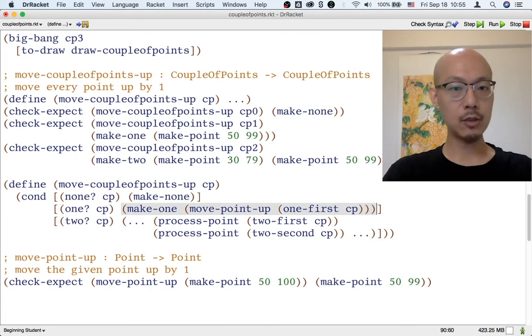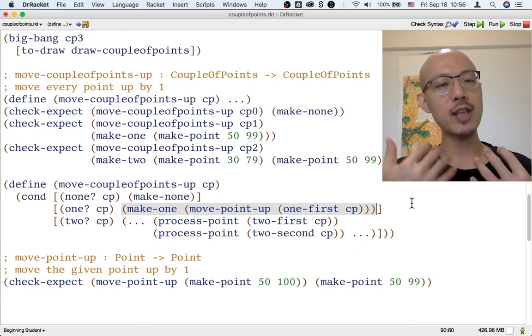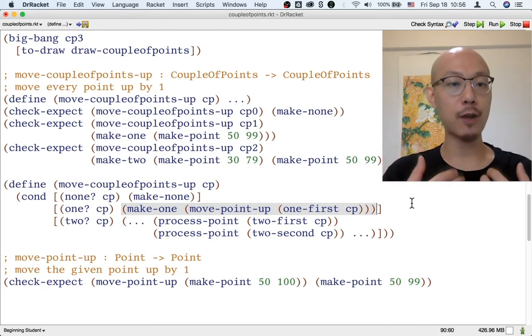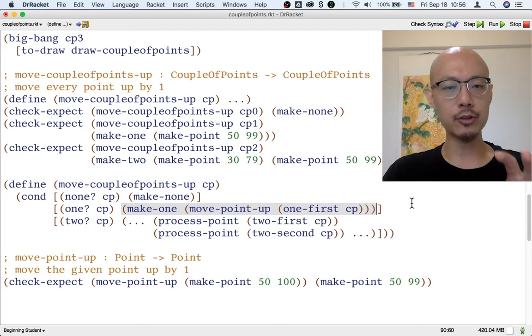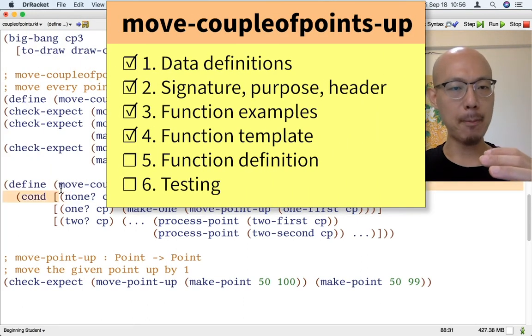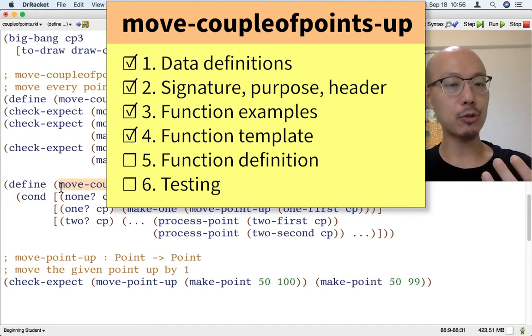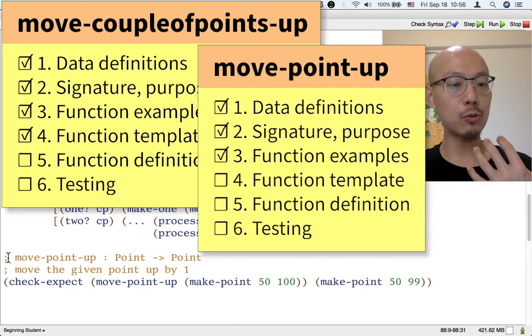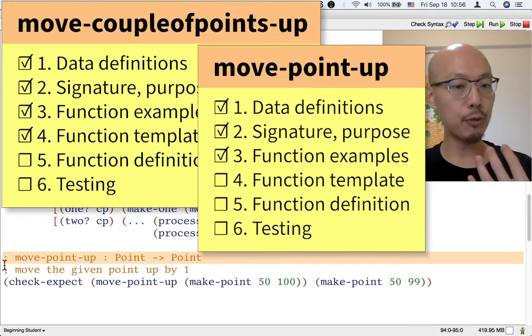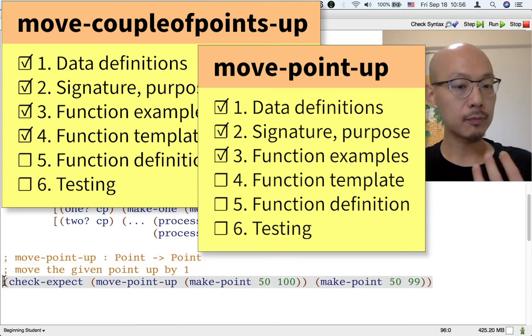We're then done with the one case in the definition of moveCouplePointsUp. Again, here it's useful to keep track of which step of a design recipe you're at for each function. Because we're kind of doing two functions at once. The outer function, the main function that we're working on is moveCouplePointsUp. And for that function, we're in the middle of step five, right in the actual definition. But the function we're wishing for, move point up, is one where we're a little bit behind in the design recipe. We're only working on step three examples.